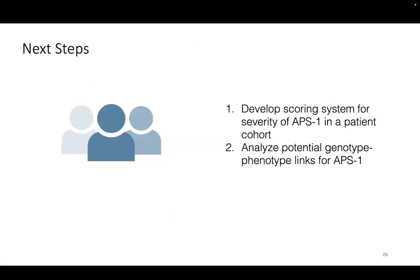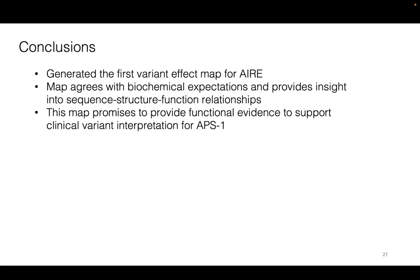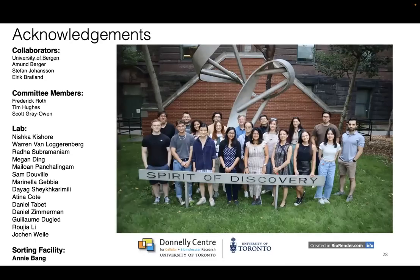I've developed a scoring system for validating the variant effect map in a patient cohort in Norway that hasn't been evaluated before. I also plan to analyze potential genotype-phenotype correlations to see whether certain symptoms are more likely to co-occur with certain variants. In conclusion, this map promises to provide functional evidence to support clinical variant interpretation for AIRE. Happy to take any questions.